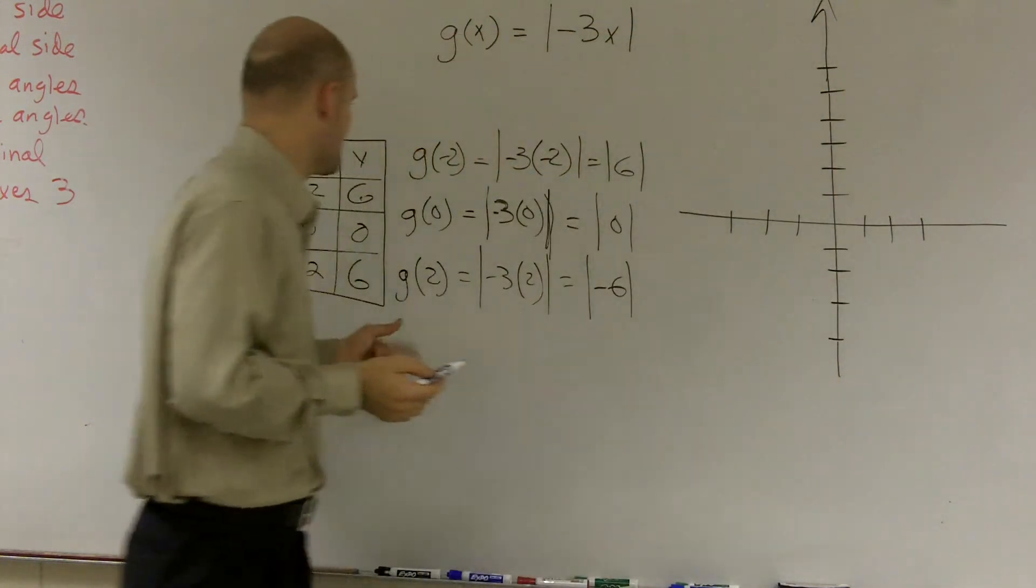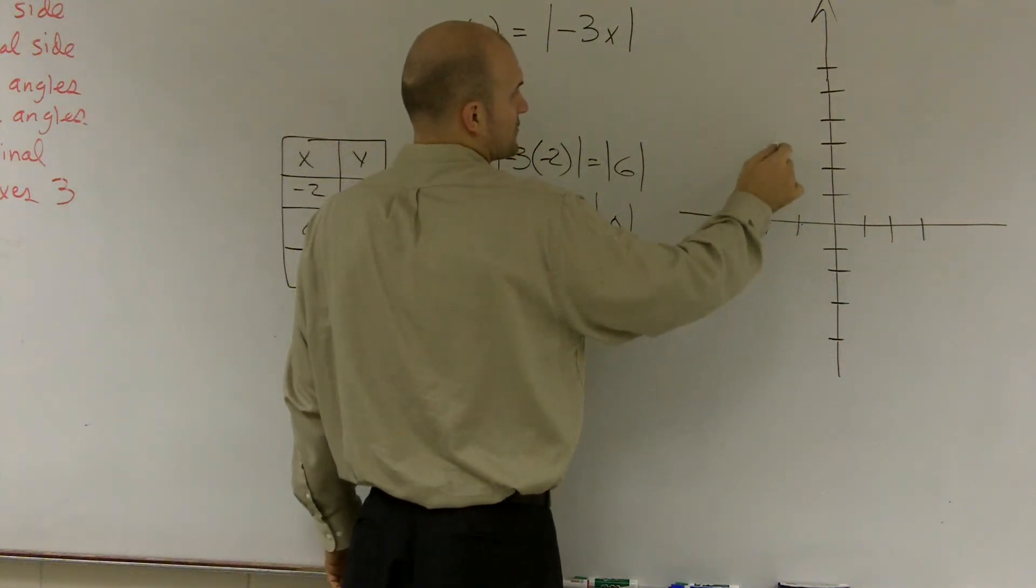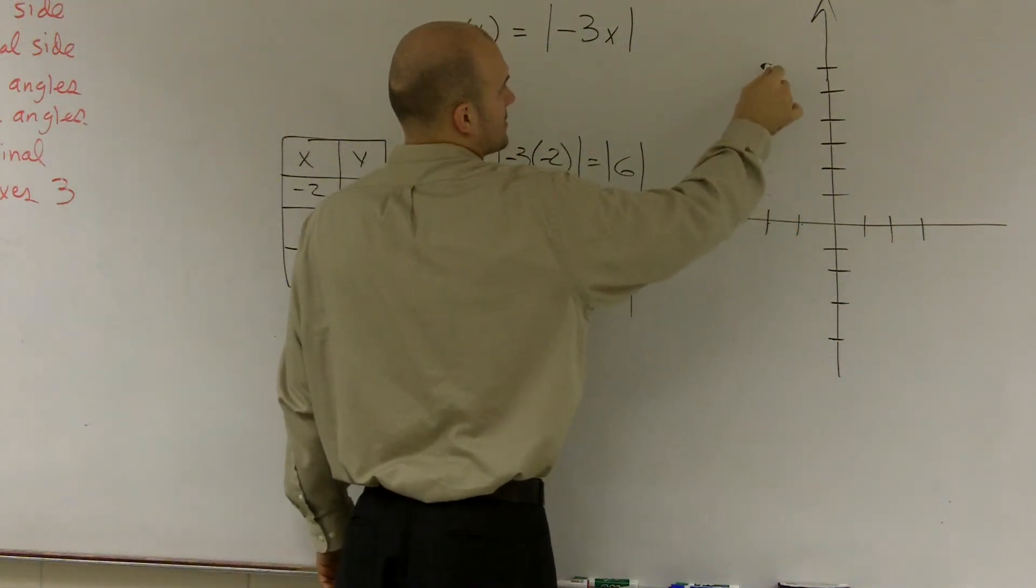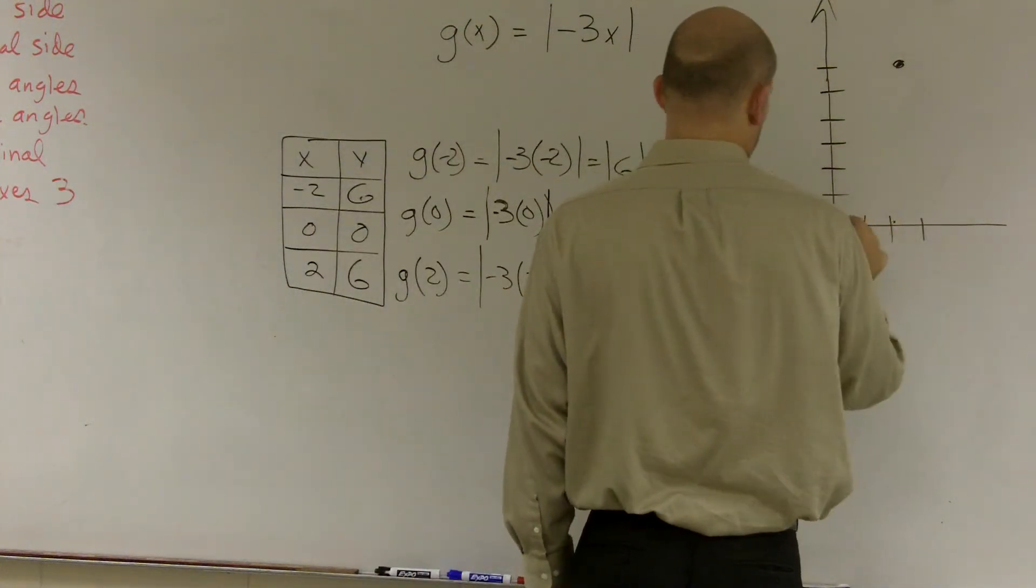So I just plot the points. Negative 2, 6. Negative 2, up 6. 1, 2, 3, 4, 5, 6. Then I go over here. 2, up 6. And my other point is 0, 0.